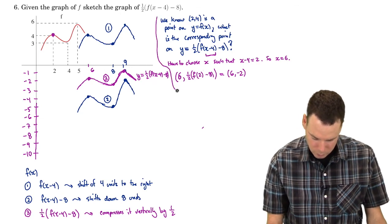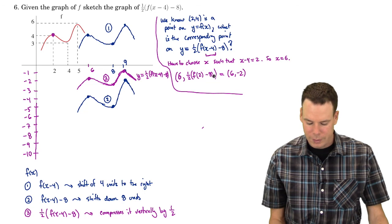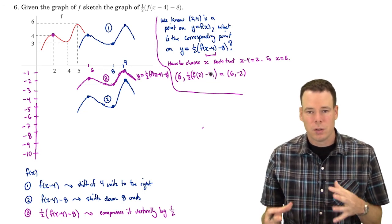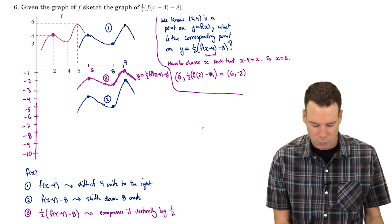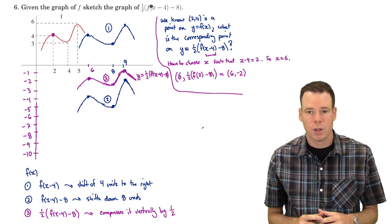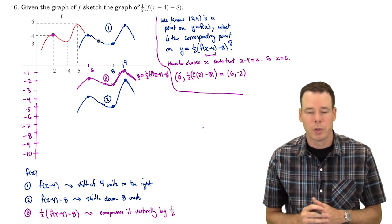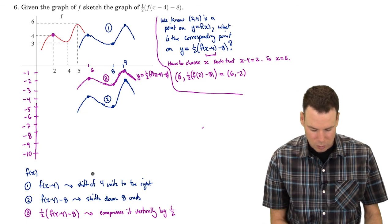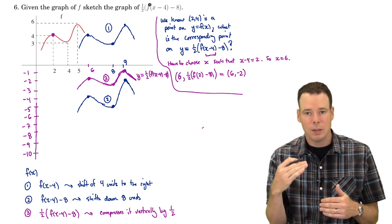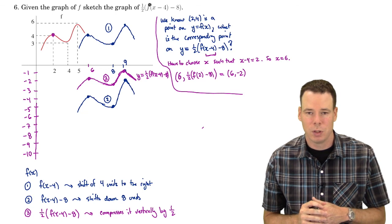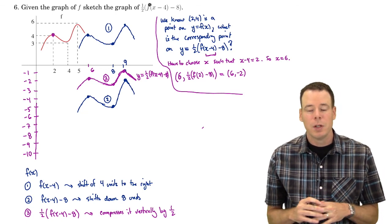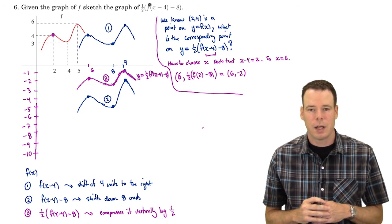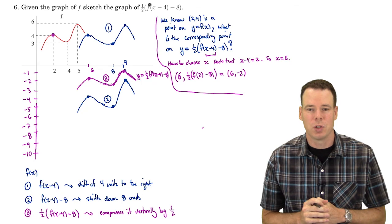That was an example summarizing all the transformations together. We didn't start with an original formula — we worked step by step, applying each transformation in sequence: horizontal shift, vertical shift, then vertical compression. Next, we'll look at how to combine two or more functions using arithmetic operations and function composition.